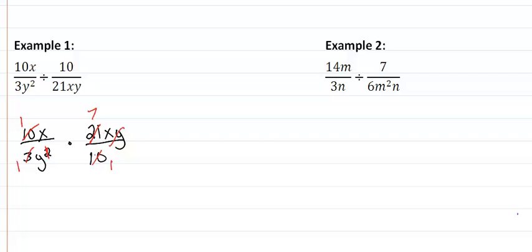We don't have anything else in common now, so we can do our multiplication. So we have 1 times 7 which gives me 7, x times x is x², and it just looks like we just have a 1 and a y for a denominator.